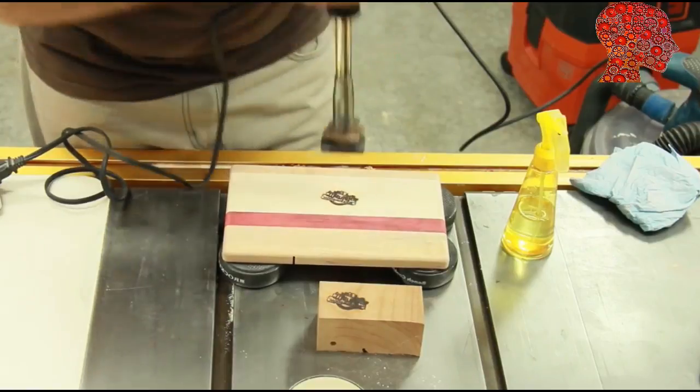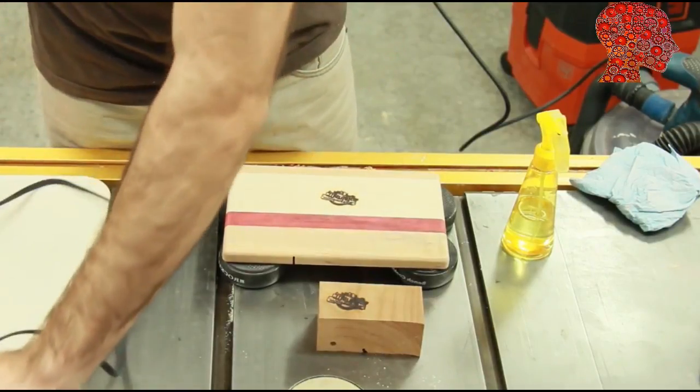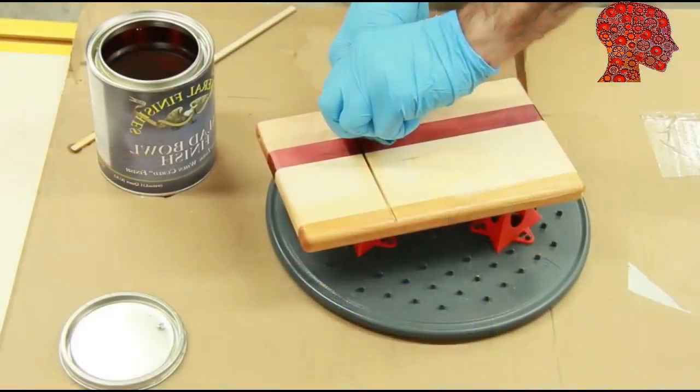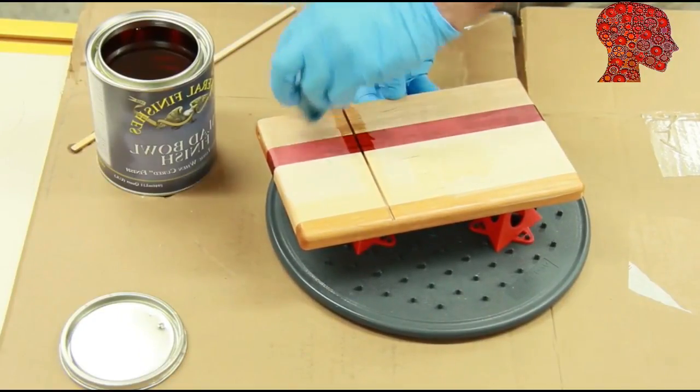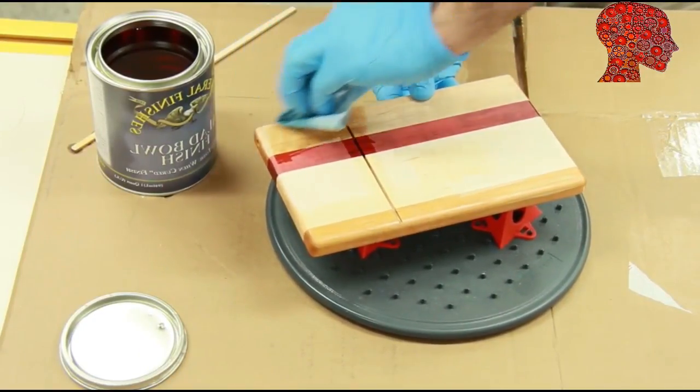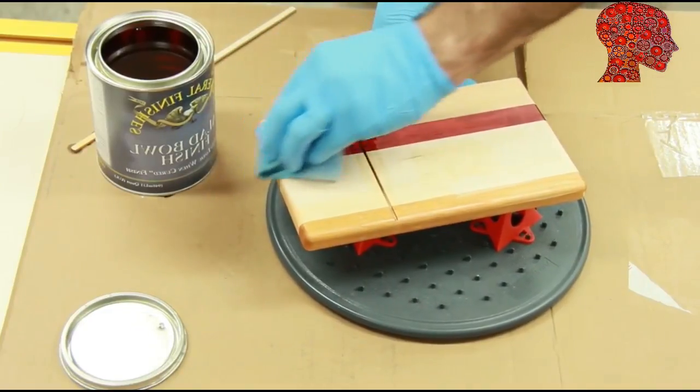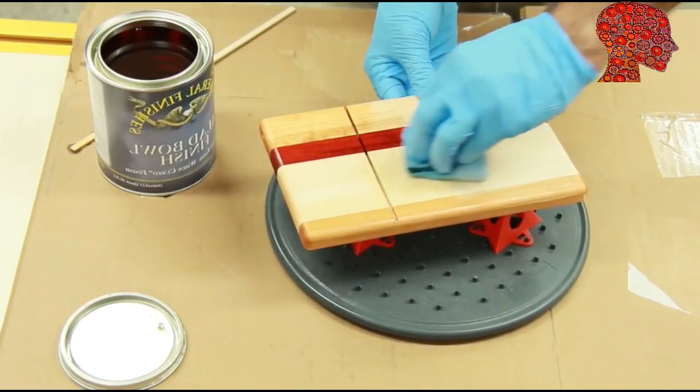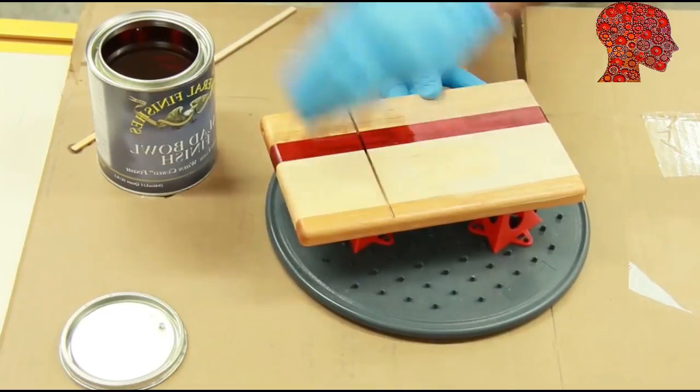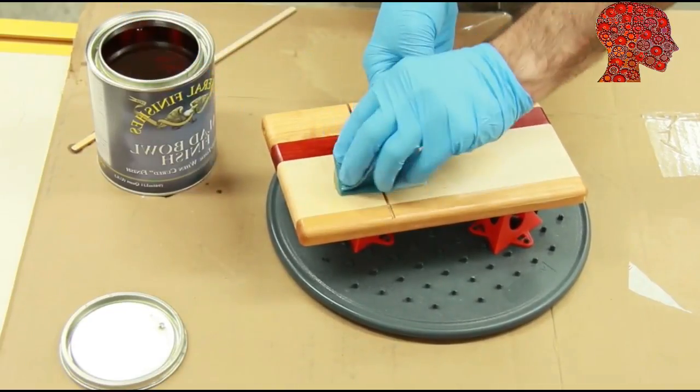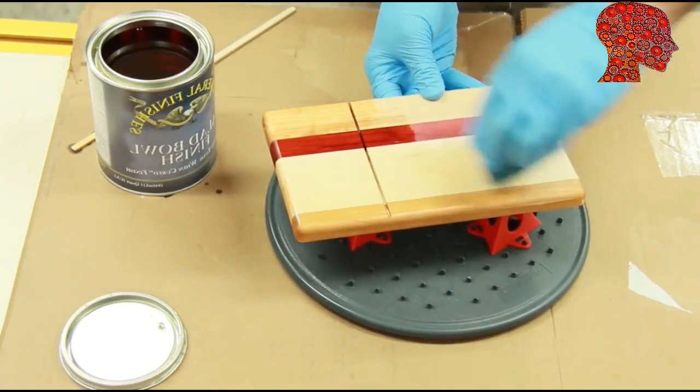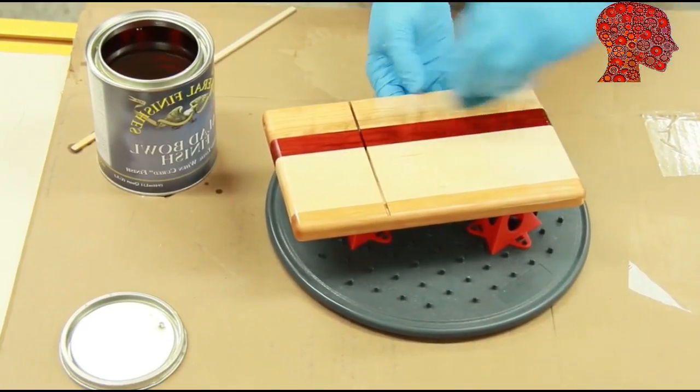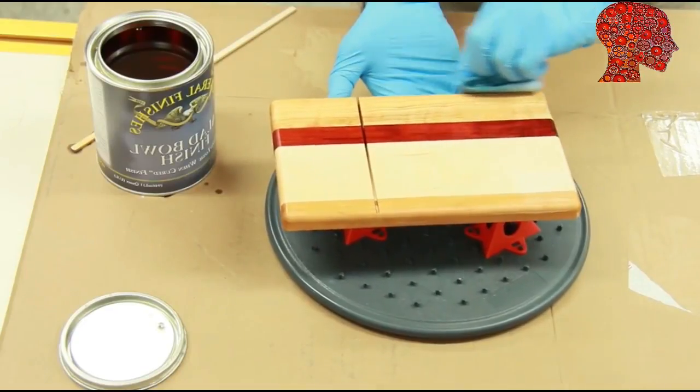For a finish, I'm actually using General Finishes Salad Bowl Finish. What I like about this for the cheese boards is it's first off a food-safe finish, and also it ends up with a hardening finish, so it's kind of like a varnish and it leaves a very nice finish. It's still like an oil-based finish, so very nice finish to use on this type of board.